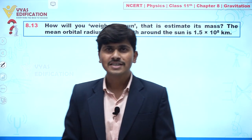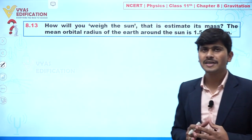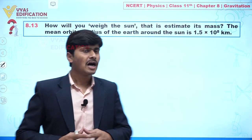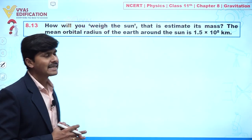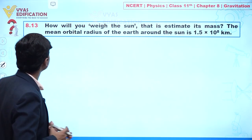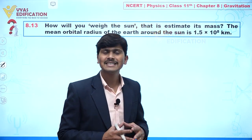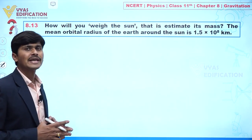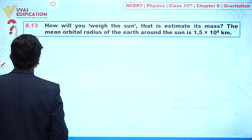We are going to discuss question number 8.13. In this question, it is given: how will you weigh the sun — that is, estimate its mass? The mean orbital radius of Earth around the Sun is given as 1.5 × 10⁸ kilometers.